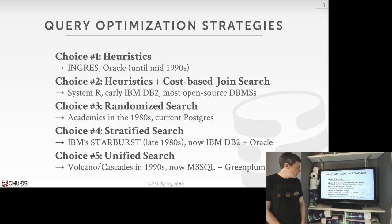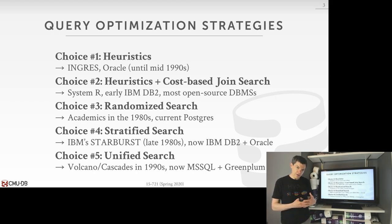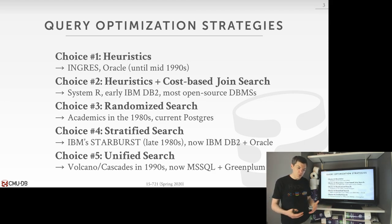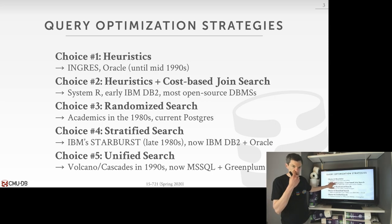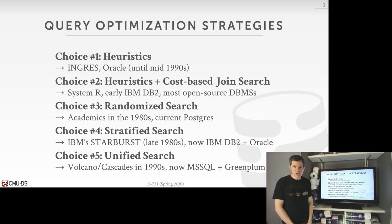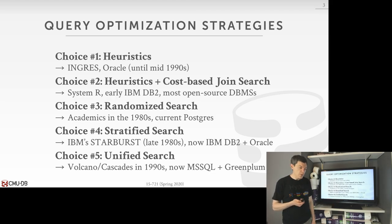We talked about the movement in the late 1980s, early 1990s towards these optimizer generators, where instead of having imperative C or C++ code to do all these steps for the query plan, we write our optimizer rules in a high-level language, then have a compiler generate the optimizer for us. Starburst was sort of the first one in the space from IBM, using a stratified search — heuristics plus cost-based join search. The unified search does both logical-to-logical and logical-to-physical transformations all in one, which is what was used in Cascades.